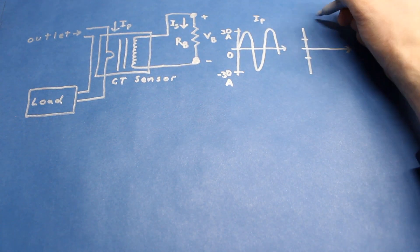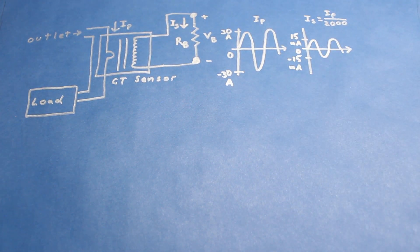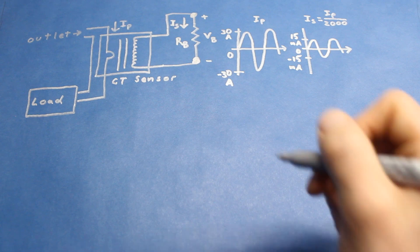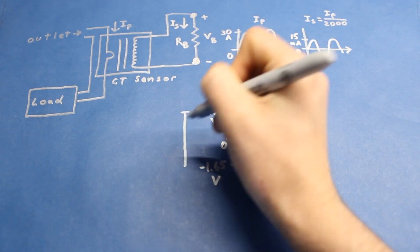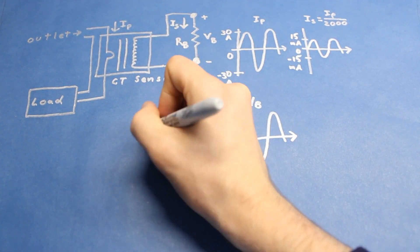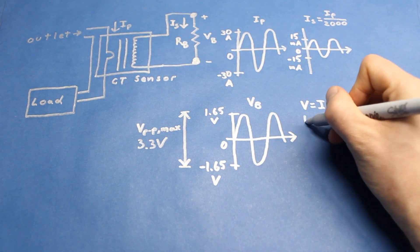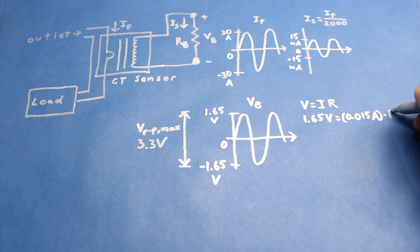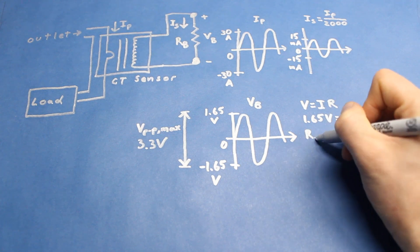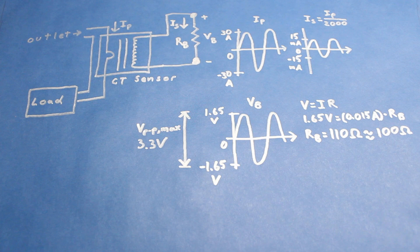As a result, at max primary current, we see that max secondary current is a sine wave that swings between 15 milliamps and negative 15 milliamps. Now at max current, we want a voltage that has a peak-to-peak value equal to the maximum input on the photon's ADC, which is 3.3 volts. We can now use ohm's law to determine the value of the burden resistor. At the max peak, we have 15 milliamps for IS and 1.65 volts across RB. Solve for RB, and we get 110 ohms.